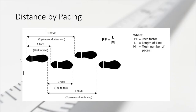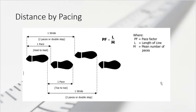What we commonly compute here is the pace factor, with symbol PF. The pace factor is computed as the length of the line divided by the mean number of paces. There are three variables for pacing: the pace factor, the length of the line, and the mean number of paces. A pace factor is measured in unit length per pace — customarily we use meters — so the pace factor is expressed in meters per pace.